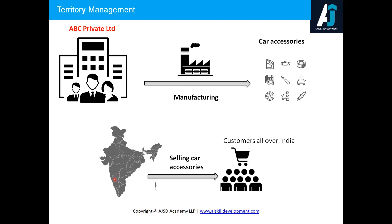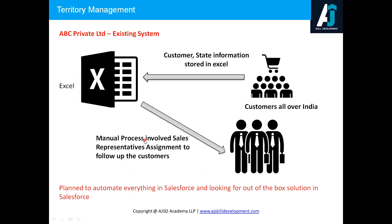ABC Private Limited feels the business is going fine and this is the right time to spread the wings across India — meaning they want to sell car accessories across India by setting up retail stores in each and every city. They also plan to set up sales representatives in each state to easily follow up with customers all over India.